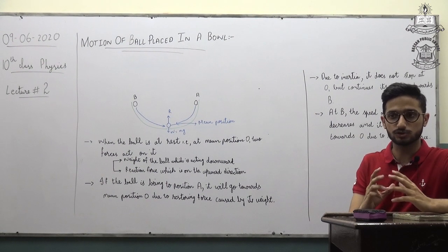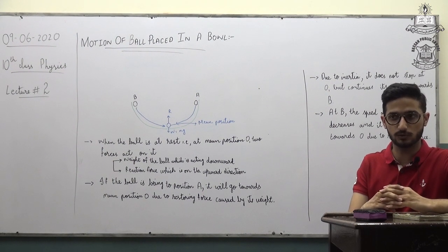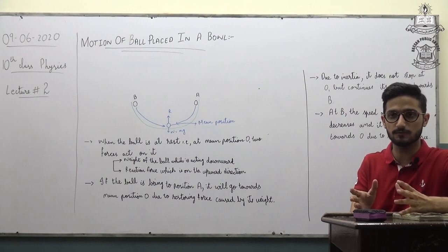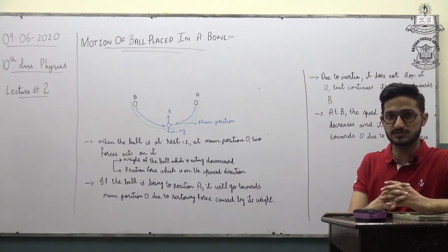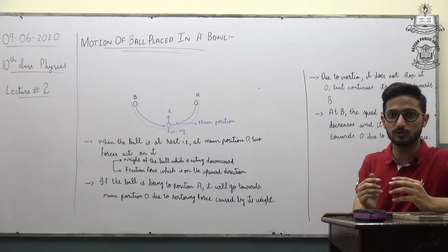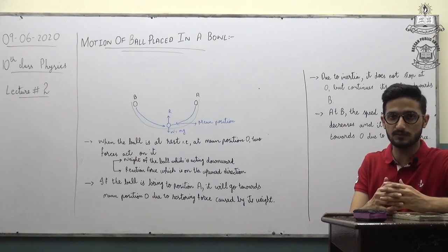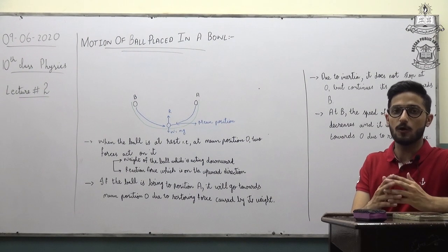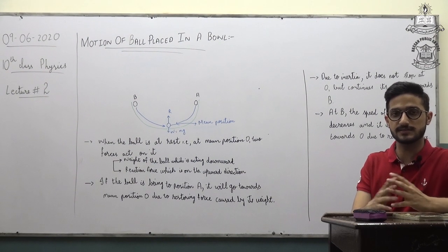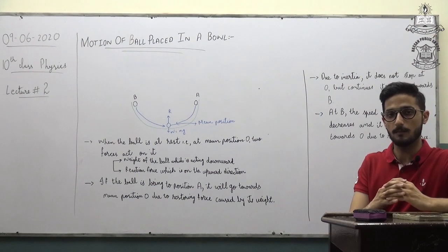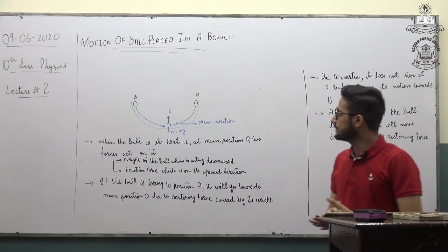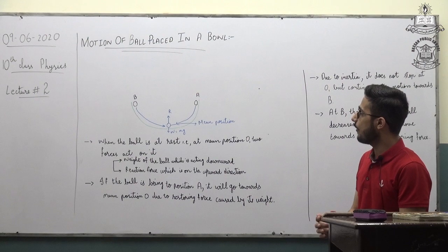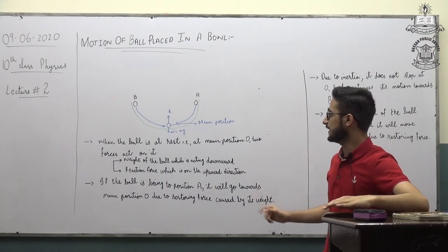We discussed this in the previous case as well — when we were stretching the spring, the restoring force wanted the spring to return to its original condition. The direction of that restoring force was always towards the mean position. Now let us start today's topic: motion of a ball placed in a bowl.